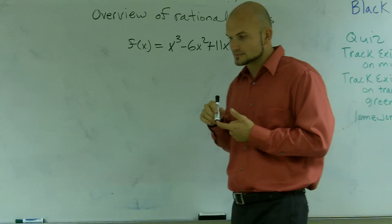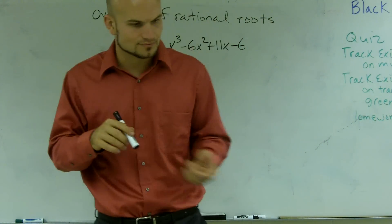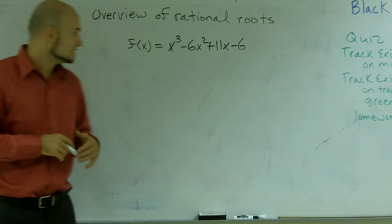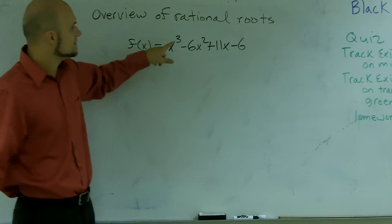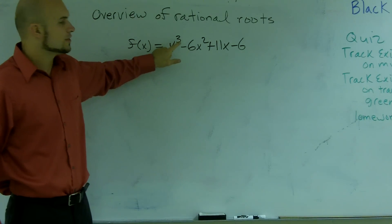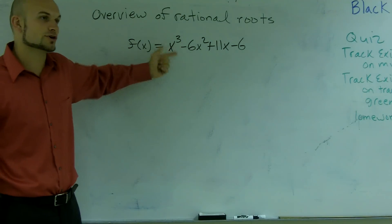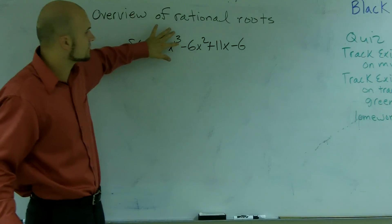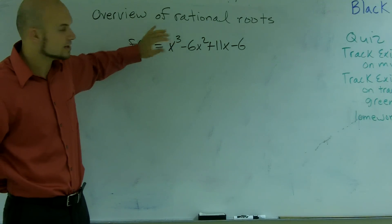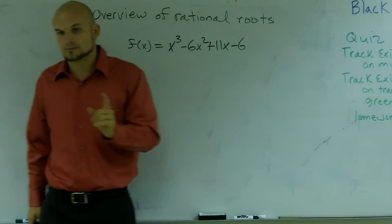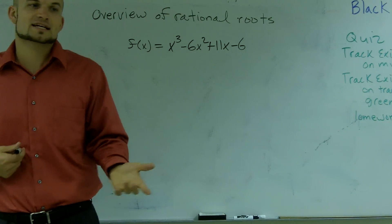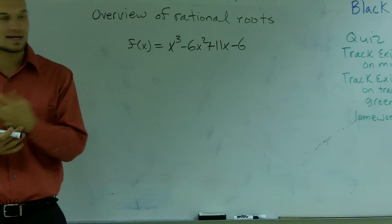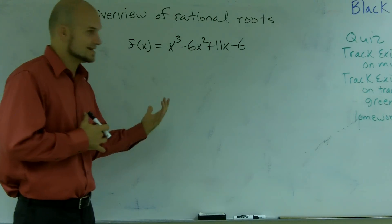The Linear Factorization Theorem states something a little different. It says there are at most three zeros, based on your highest degree. So when looking at this problem, I have a maximum of three factors and a minimum of one. When a question asks what are the zeros or roots, I know I'm looking for between one and three — I can't have any more, and I can't have any less.